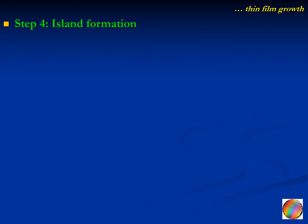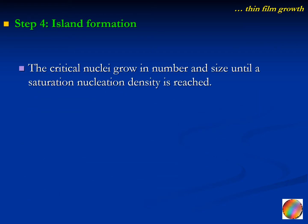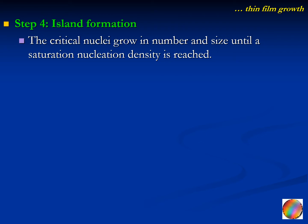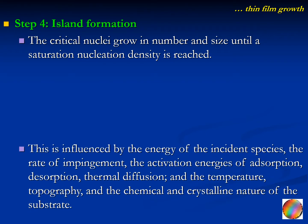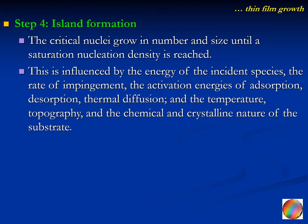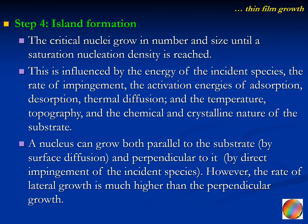After nucleation comes island formation. The critical nuclei grow in number and size until a saturation nucleation density is reached. This is influenced by the energy of the incident species, the rate of impingement, the activation energies of adsorption, desorption, thermal diffusion, and the temperature, topography, and the chemical and crystalline nature of the substrate. A nucleus can grow both parallel to the substrate by surface diffusion and perpendicular to the substrate by direct impingement, but the rate of lateral growth is much higher than the perpendicular growth. The grown nuclei are called islands.